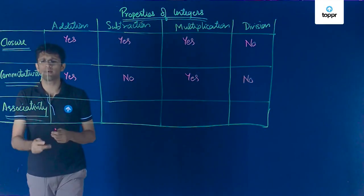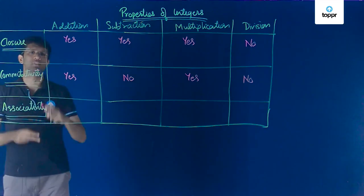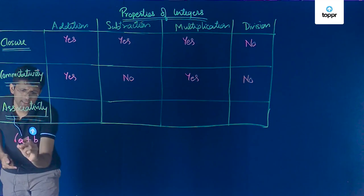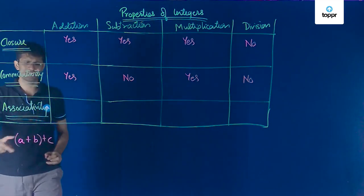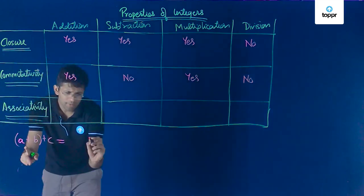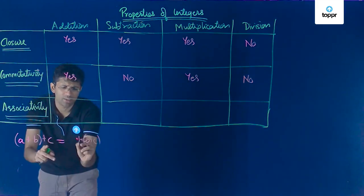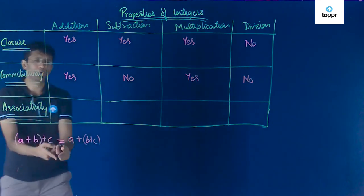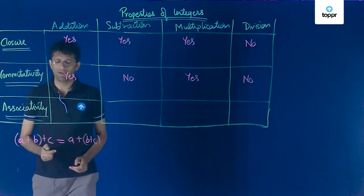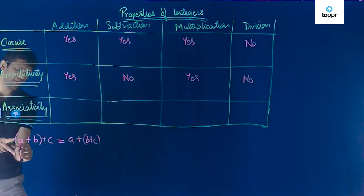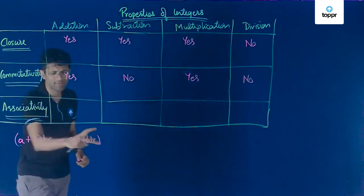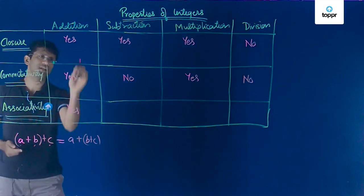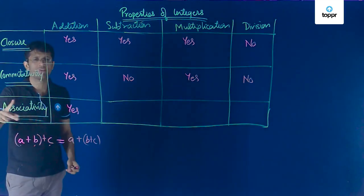Now we will check the third property, associativity, for addition first. If we have (a + b) + c, the result is the same as a + (b + c). In other words, (a + b) + c = a + (b + c). This is always valid for all integers a, b, and c, so addition is an associative operation.